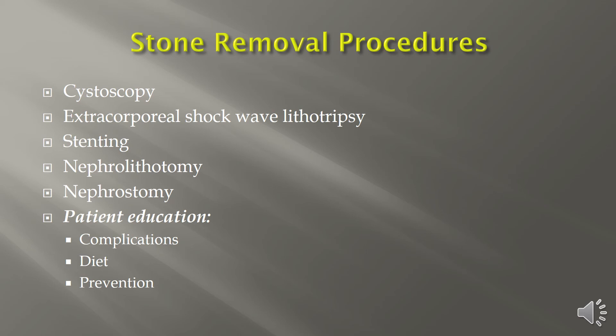When we know stones are going to be passing, we educate patients on straining their urine. Renal stenting can also be an intervention — similar to angioplasty in the renal artery — where a small catheter is placed in the renal artery. The catheter has a balloon on the end that inflates so the narrowed area can dilate and the obstruction can pass through.